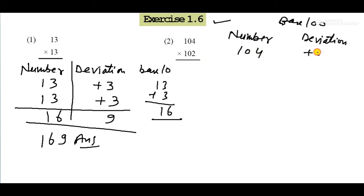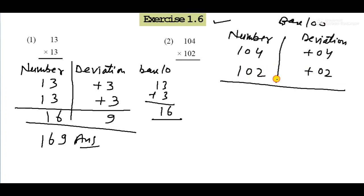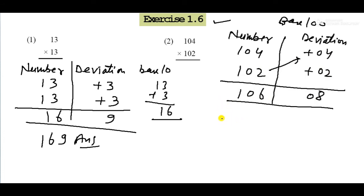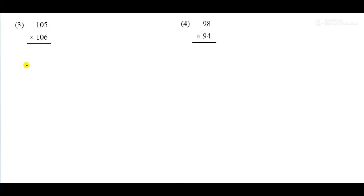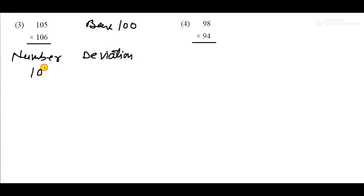Question 2. Base is 100. Number 104, deviation plus 04. Number 102, deviation plus 02. Multiply: 2 times 4 equals 8, write 08. Add crosswise: 104 plus 2 equals 106. Answer is 10608.